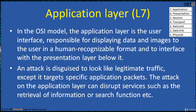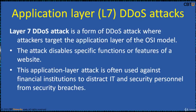The attack on the application layer can disrupt services such as the retrieval of information, search function, browser function, email services, photo applications, etc. A Layer 7 DDoS attack is a form of DDoS attack where attackers target the application layer of the OSI model. The attack disables specific functions or features of a website. Application layer attacks are often used against financial institutions to distract IT and security personnel from security breaches.